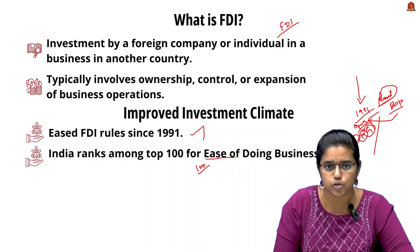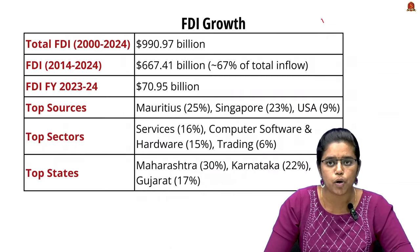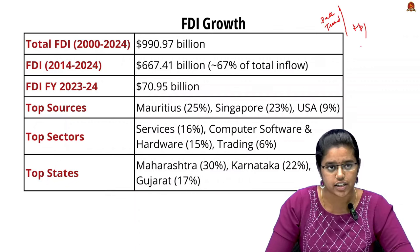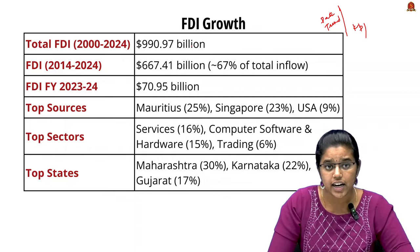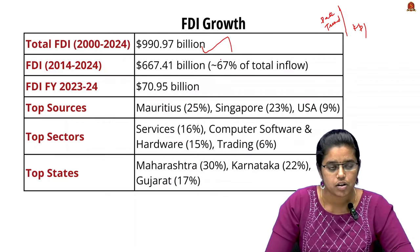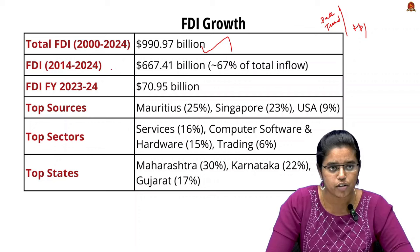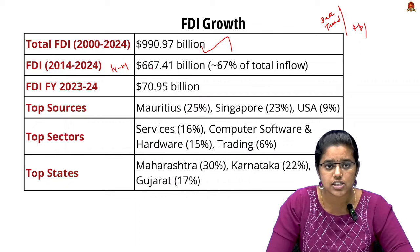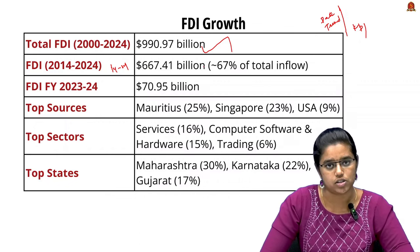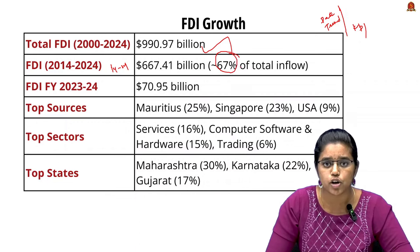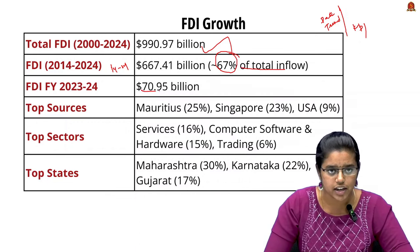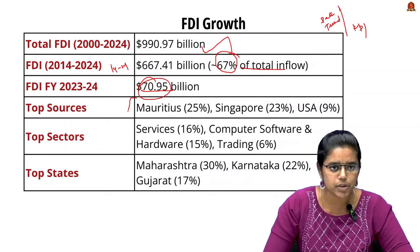Key FDI data: total FDI in India from 2000 to 2024 is about $990 billion. From 2014 to 2024, FDI was about $667.41 billion US dollars, accounting for about 67% of total inflow. The FDI for the current year is about $70.95 billion dollars.